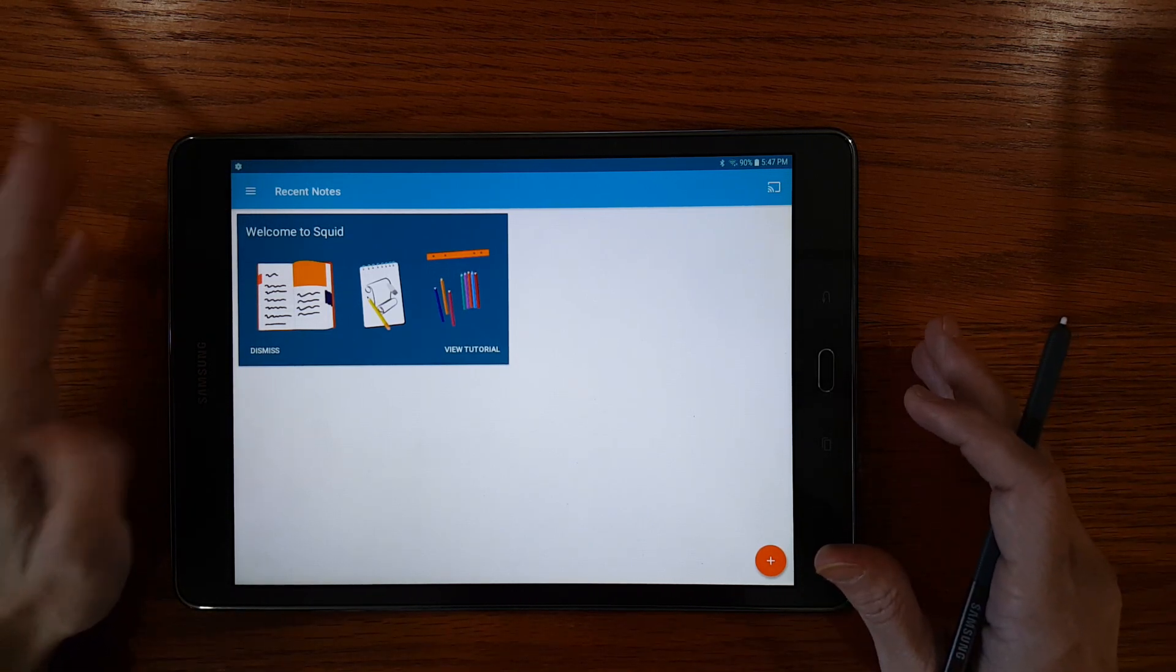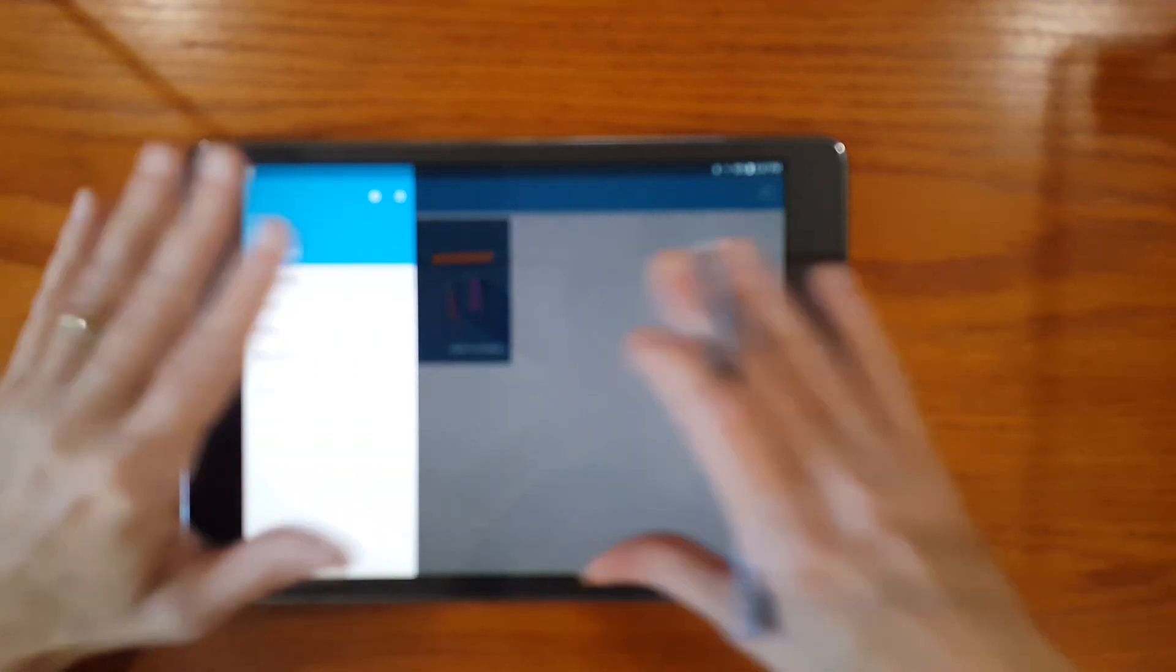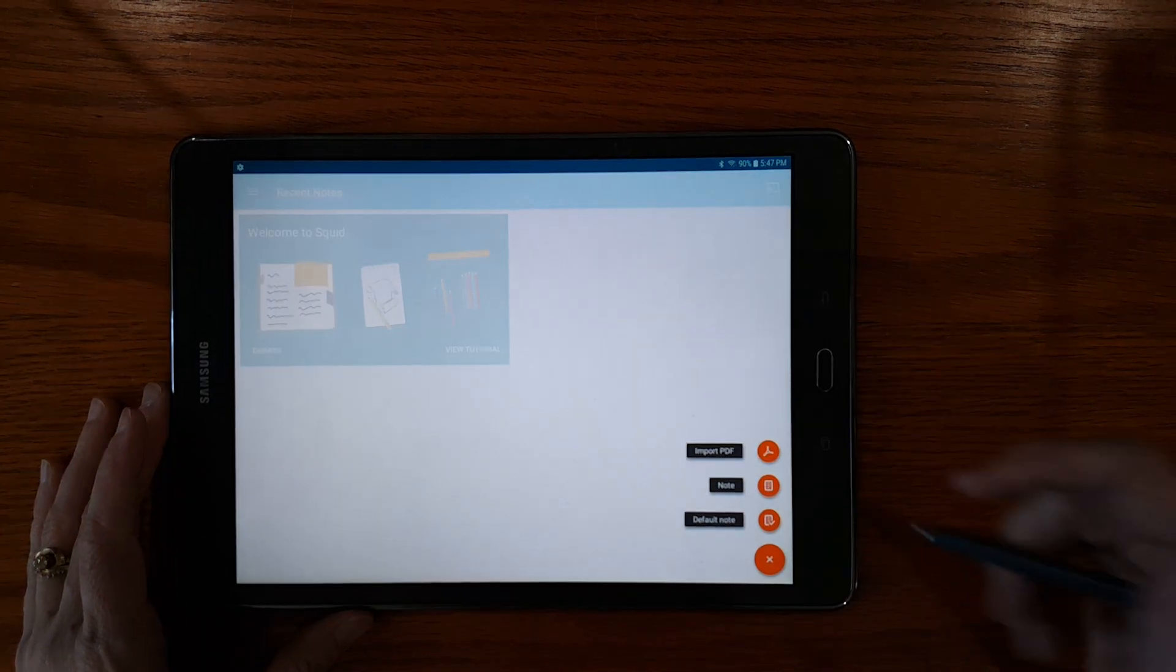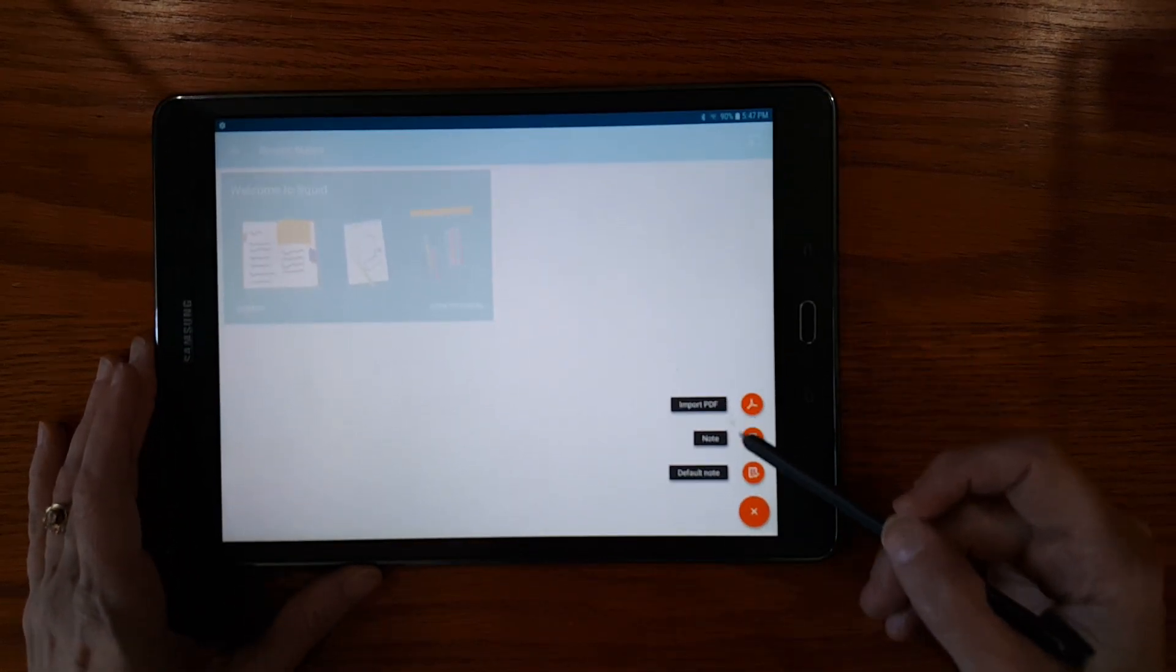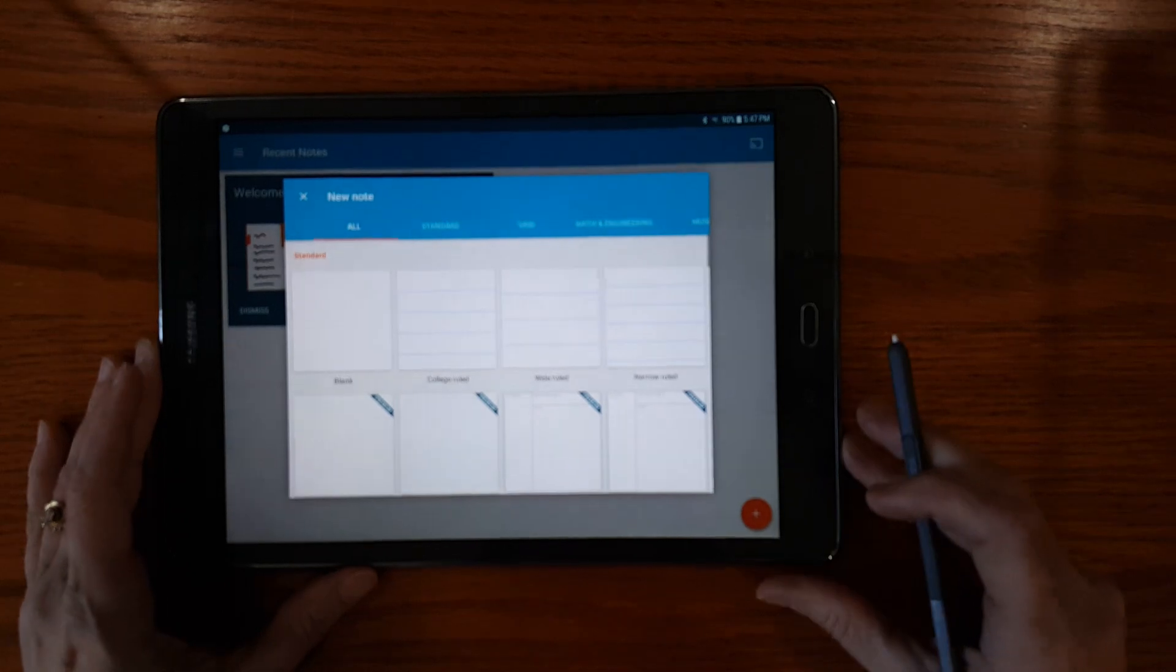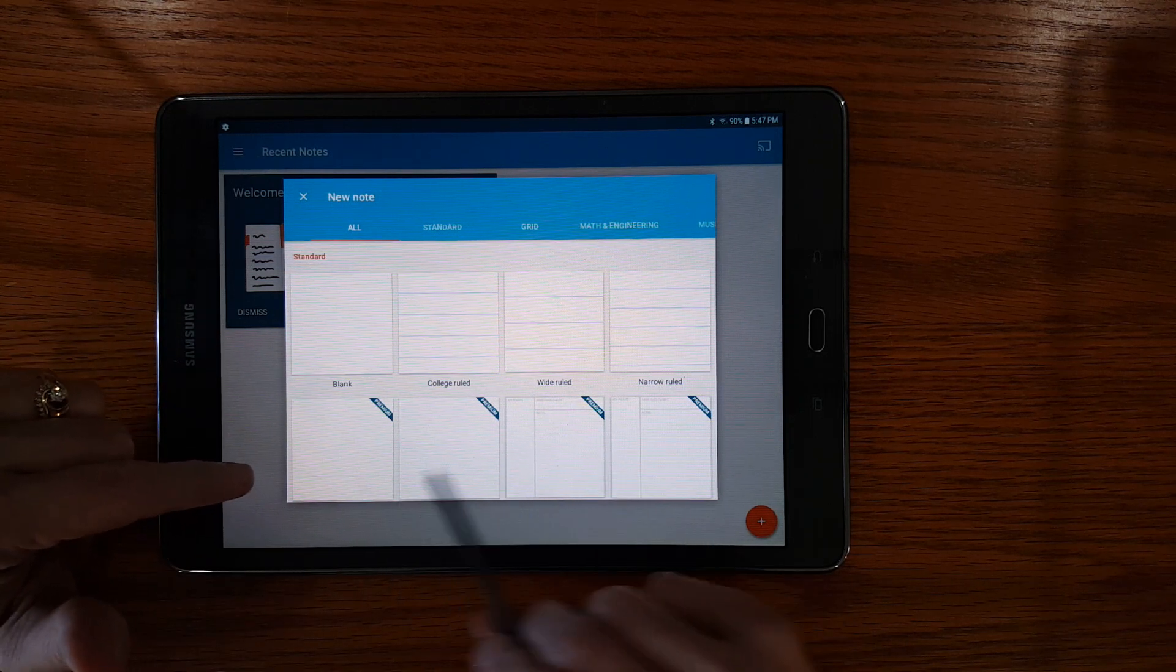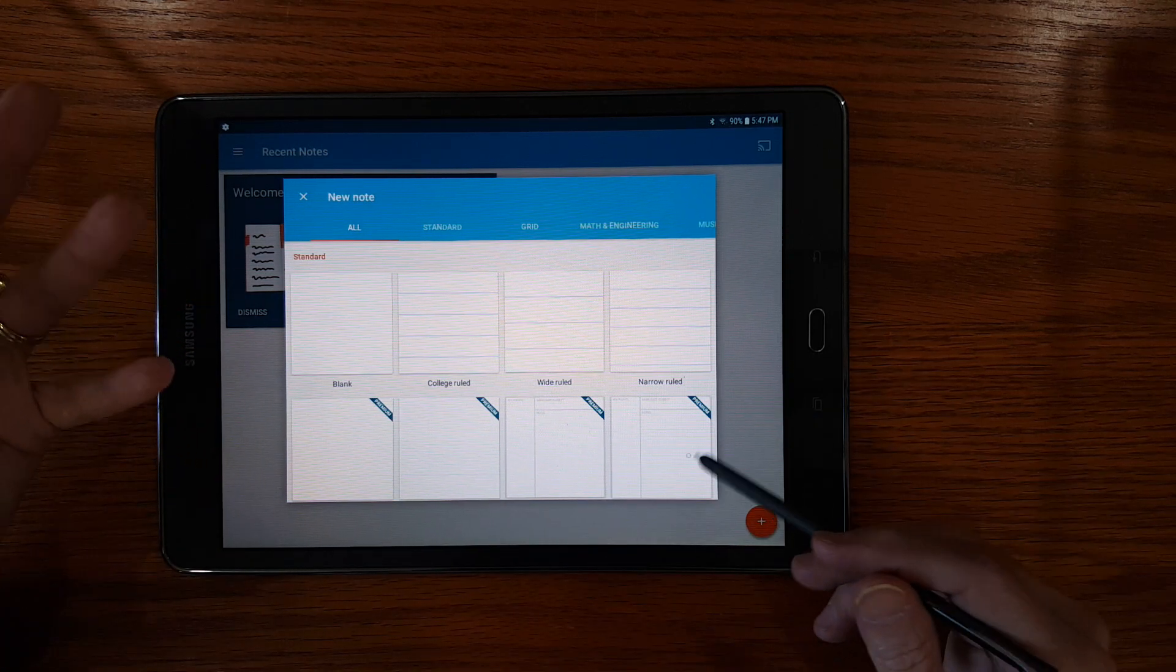Like S Note it appears that your notebooks you don't have a very elaborate file system. Lecture notes that was one of the benefits is that you could organize your notebooks into file folders. Now you can import a PDF, you can create a note, or create a default note. I'm going to go ahead and just create a note. You can choose what kind of page ruling you want. This is a free app but to get some of the more premium page designs you have to pay extra.